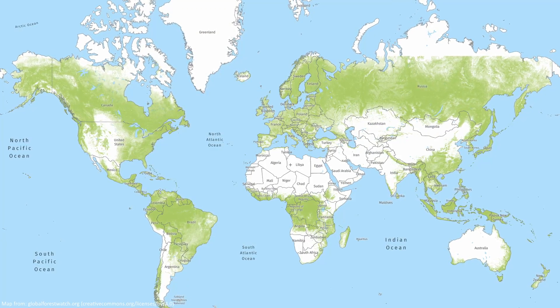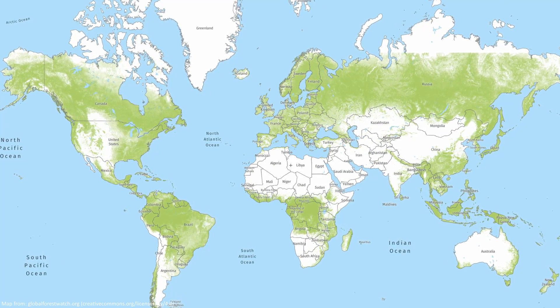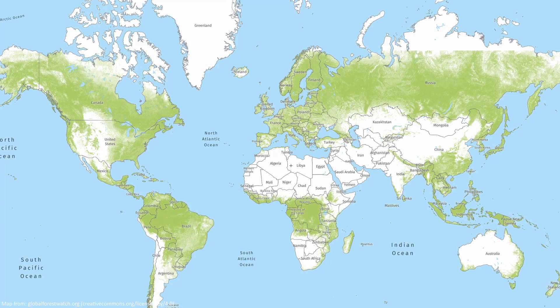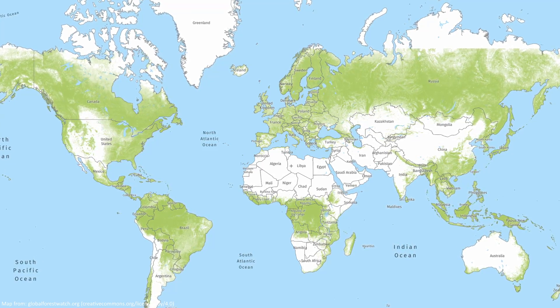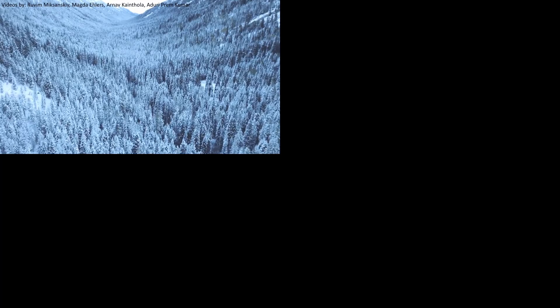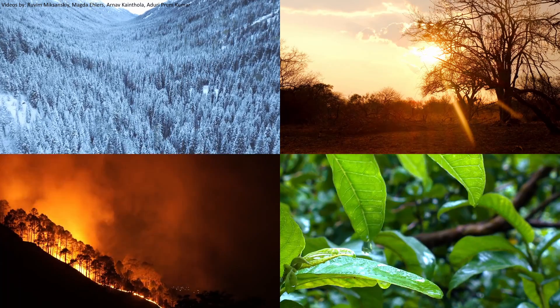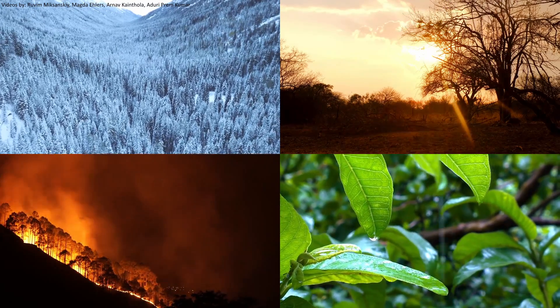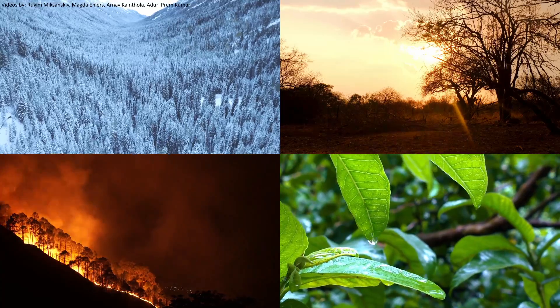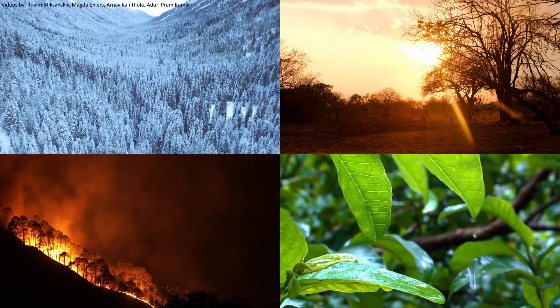Forests cover about 30% of the earth's surface and contain an estimated 3 trillion trees, being home to 80% of the world's terrestrial biodiversity. They exist in extremely cold, burning hot, bone dry and super wet climates. To thrive in every single one of these climates, every type of forest has a special characteristic to survive and thrive.